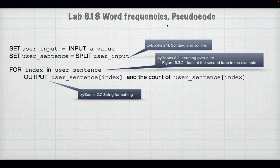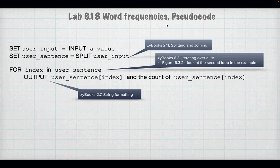Lab 6.18: word frequencies. This is where you use the count function. Input the values, split them. Then for each index in user_sentence, output user_sentence[index] and the count of user_sentence[index]. You get the user sentence by splitting input, then iterate over that list and for every word output its frequency.